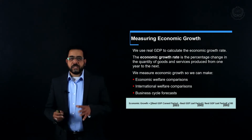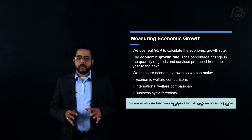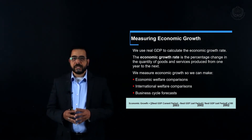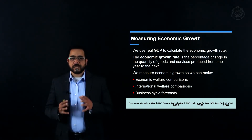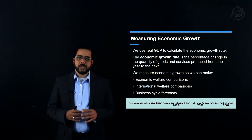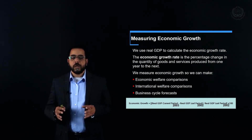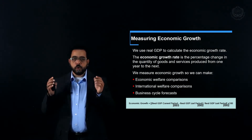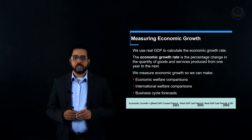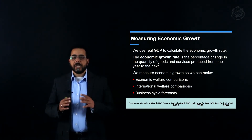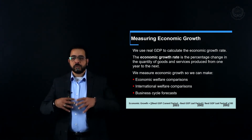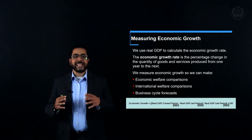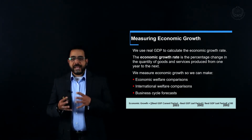Welcome back everyone. At this point we know about the nominal GDP, which is current quantities times current prices, the real GDP which is current quantities times base year prices, and we know about the deflator, which is nominal GDP over real GDP times 100. Now we'll be introduced to a new economic parameter: economic growth.